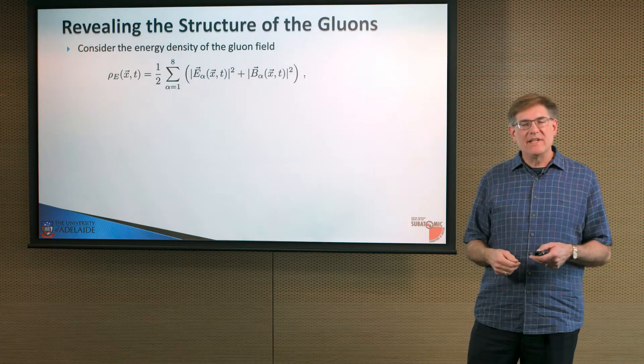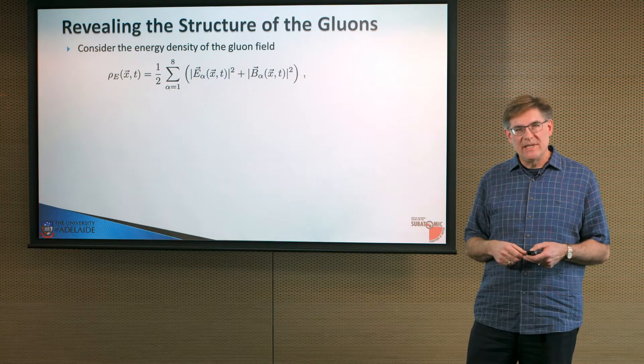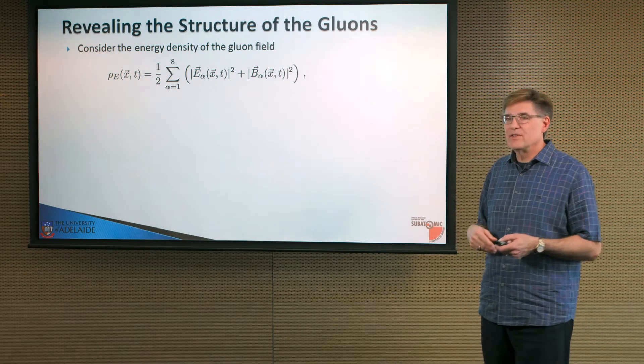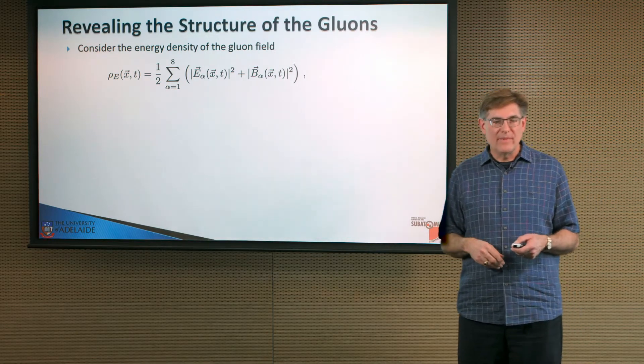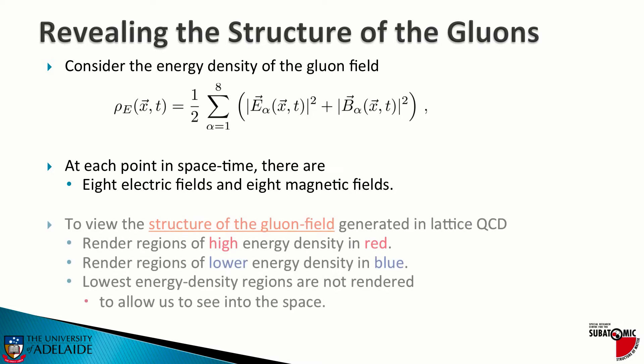I'm going to consider the energy density of the gluon field at each point in space and time. That's just the square of the electric field strength and the magnetic field strength, and we add it up over those eight different gluon fields. At each point in space-time there are eight electric fields and eight magnetic fields, and we add up the energy associated with those fields.